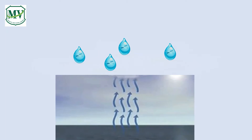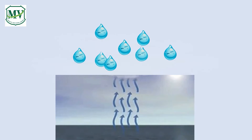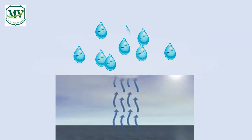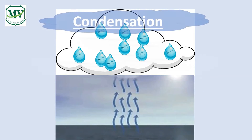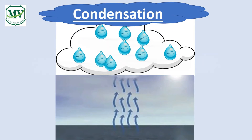As the water vapor in the atmosphere rises, it cools and turns into tiny water droplets. These tiny water droplets combine to form clouds. This is the second process of the water cycle, which is condensation.